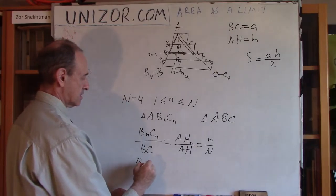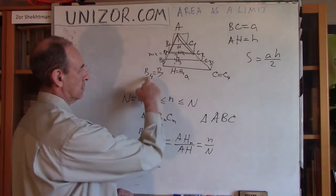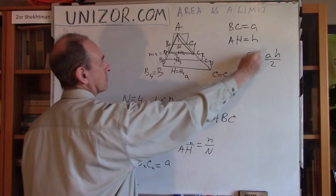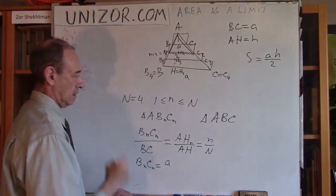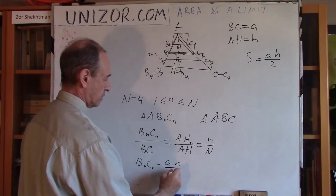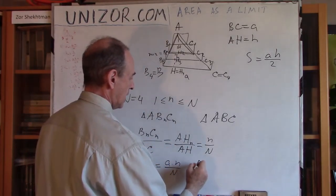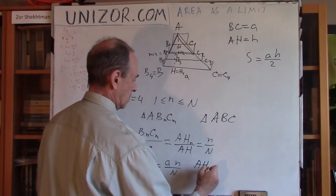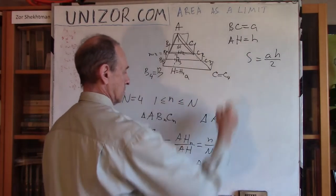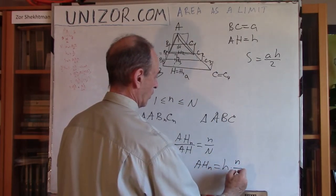Which means that BNCN is equal to BC, which is A, right? BC n divided by capital N, and HN, AHN is equal to AH, which is altitude, also times n over N.